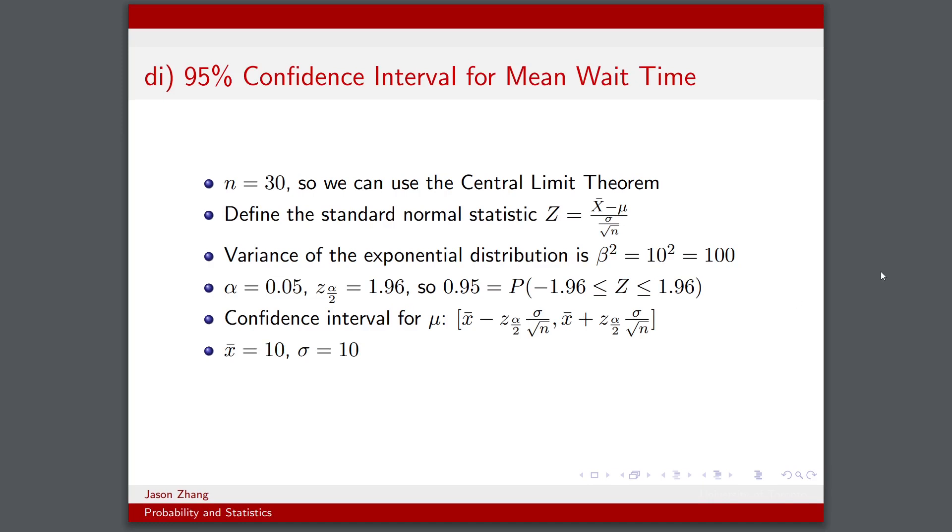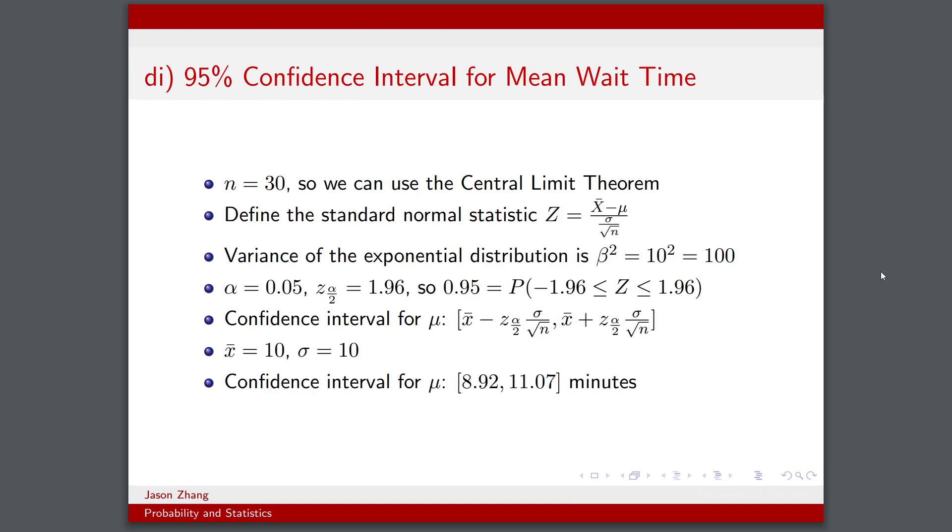So now we can set up our confidence interval using this formula. We just plug in our values. We know that x̄ = 10. This is just what we've observed from the 30 days we've waited for the bus. And again, σ would be equal to 10, because σ would be the standard deviation of the exponential distribution, which is β.